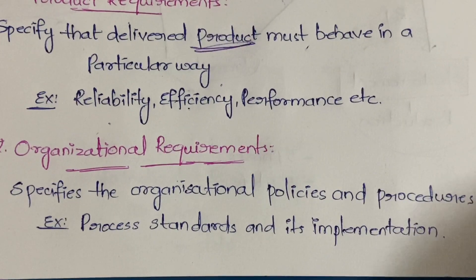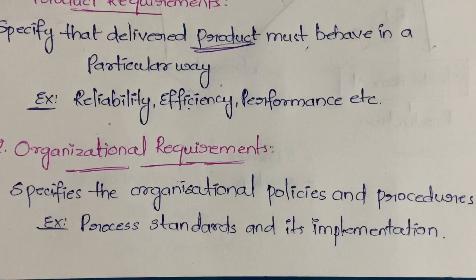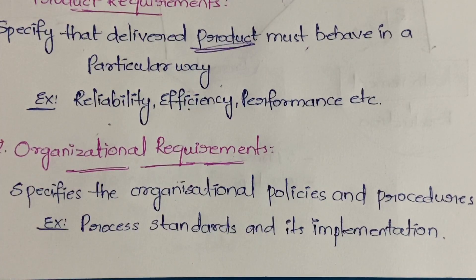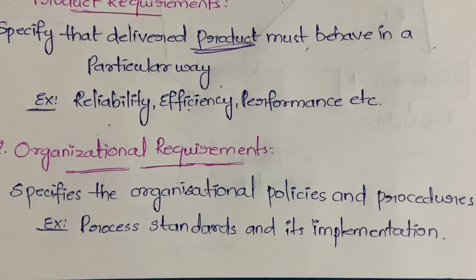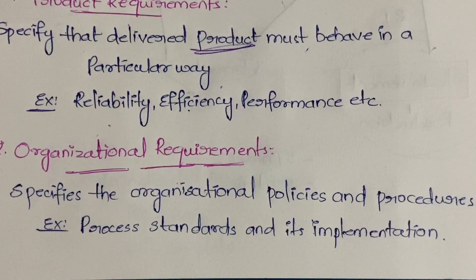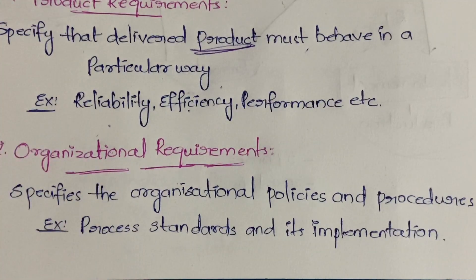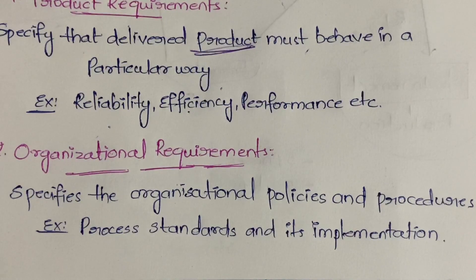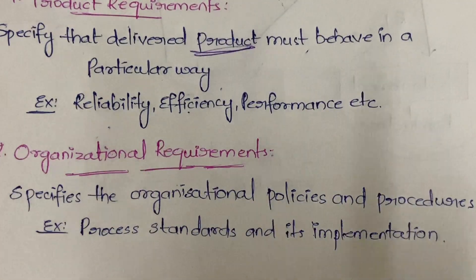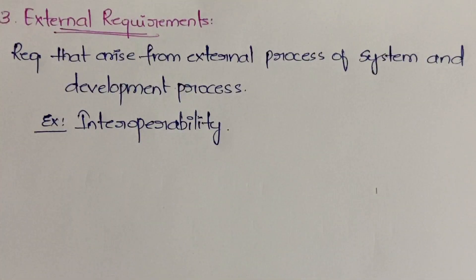Organizational requirements specify the organizational policies and procedures. If you are working in an organization, that organization will have some rules — like in a college, rules such as no ragging or no cell phones. So requirements which specify the organization's policies, procedures, and rules come under organizational requirements. For example, process standards and their implementation — what standards the product must maintain and how you implement those standards.